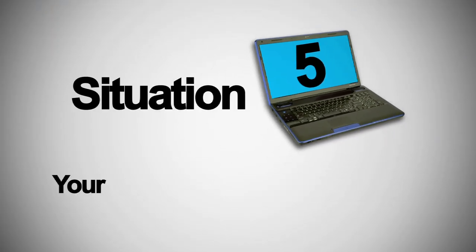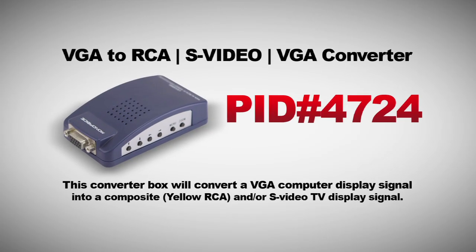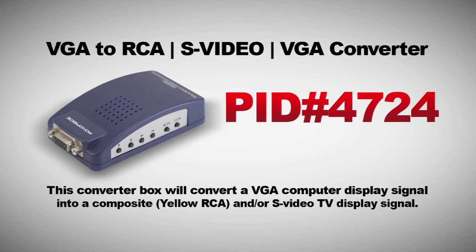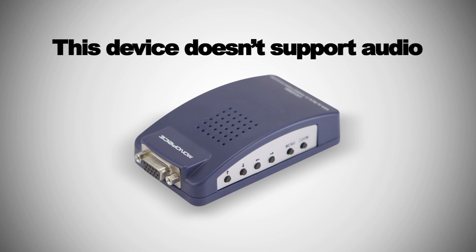Situation number five: your laptop has a VGA video output but your TV doesn't have a VGA input. Don't worry — Monoprice has a solution for you. PID4724 converter box will convert a VGA computer display signal into a composite yellow RCA and/or S-Video TV display signal. It even has a VGA pass-through so that you can keep your computer monitor connected while sending a signal to the TV — all outputs are driven simultaneously. It draws power from an available USB port using an included USB power cable. As mentioned in situation number two, a VGA cable doesn't support audio, so you have to have separate audio and video between the laptop and the TV.